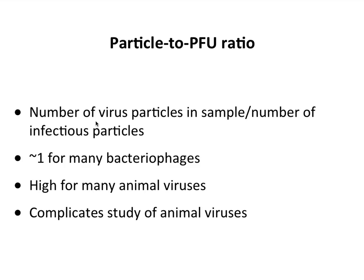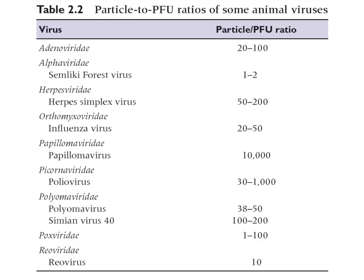Another important concept relating to virus infectivity is the particle-to-PFU ratio: the number of virus particles in a sample divided by the number of infectious particles. If a sample has 100 virus particles and 100 infectious particles, the ratio is 1. This ratio is about 1 for many phages but is high for many animal viruses. A chart shows particle-to-PFU ratios for some animal viruses: for adenoviruses the ratio is 20–100, meaning for every 100 particles only about one is infectious.